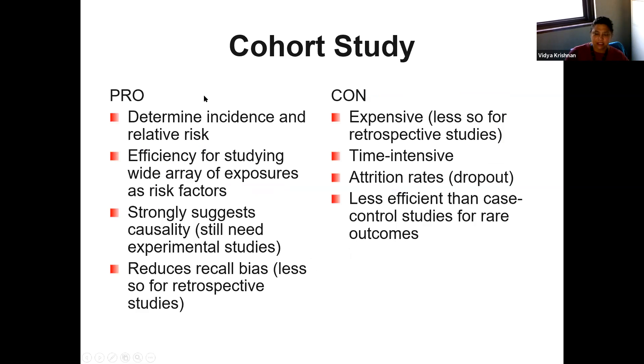So in summary, for cohort studies, some of the pros for a cohort study, you can actually determine incidence and relative risk now. Efficiency for studying a wide array of exposures as risk factors. It can strongly suggest causality because now you have a time element as well. You would still need experimental studies. And you can reduce recall bias, particularly in prospective studies. The cons, like Dr. Strohl mentioned, it's incredibly expensive to maintain a cohort, a large cohort for any period of time. It's time intensive. There can be high attrition rates. People move. People drop out of the study. And they're less efficient than case control studies for rare outcomes.